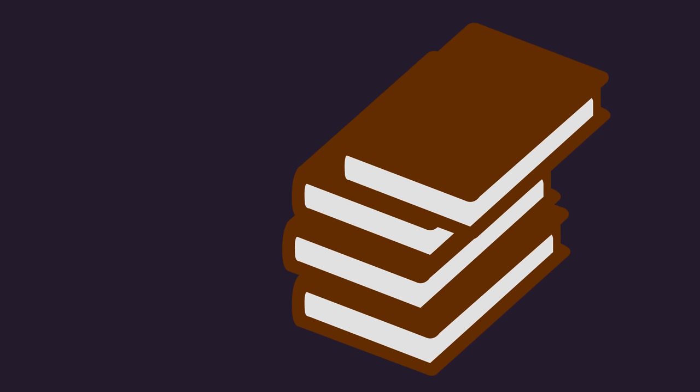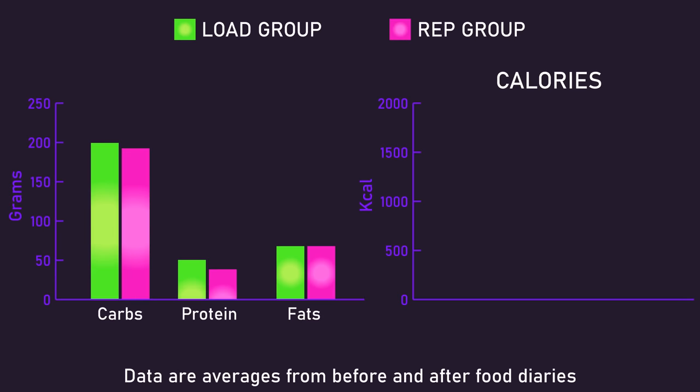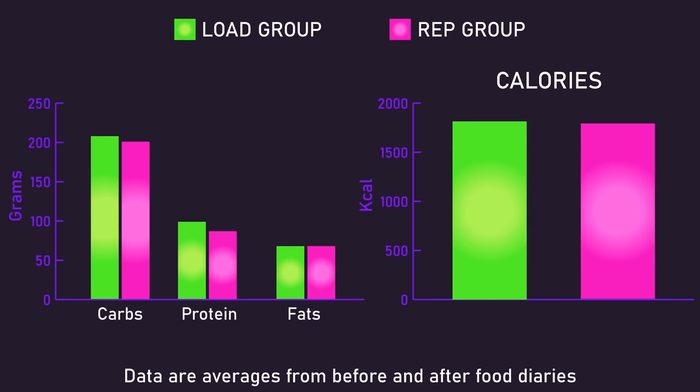Food diaries, although not always super reliable, were measured by the researchers, and fat, carb, protein, and calorie intake were similar between the load and rep groups.